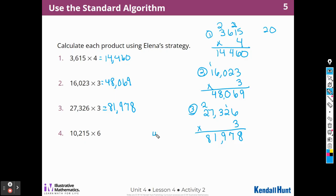Last problem. Number 4. I have 10,215 times 6. 6 times 5 is 30. So I'm going to have to write that 30 like that. 6 times 1 is 6. I'm going to have to add the 3 tens. So 6, 7, 8, 9. 6 times 2 is 12. 6 times 0 is 0. But I'm going to have to add that 1,000. 1 plus 0 is 1. And 6 times 1 is 6. So number 4 is 61,290. That was some good practice on that standard algorithm.